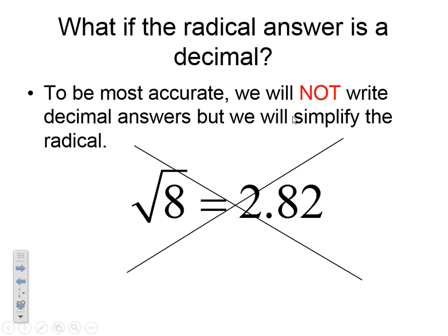Now, what if the radical answer in our calculator is a decimal? Well, to be most accurate, we will not write decimal answers, but we will simplify our radicals. So the square root of 8, yes, in your calculator is 2.82 approximately, but we're not going to do approximations. I want exact answers. So we have to know how to simplify a radical if our calculator gives us a decimal answer.